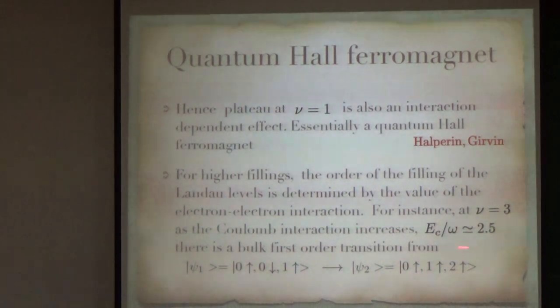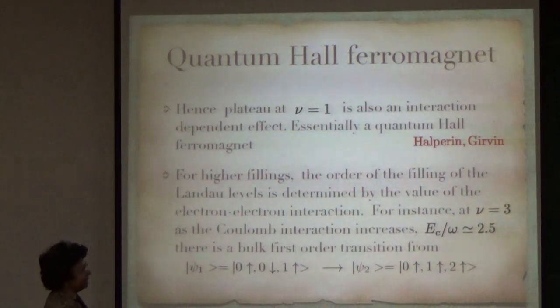What you find is that there is a bulk first order phase transition from 0 up, 0 down, 1 up to 0 up, 1 up, 2 up. In fact, it becomes a fully polarized state at ν = 3 once I include Coulomb interactions of this form.